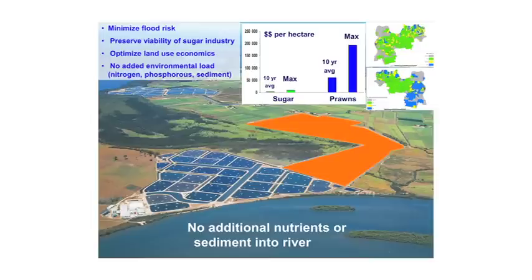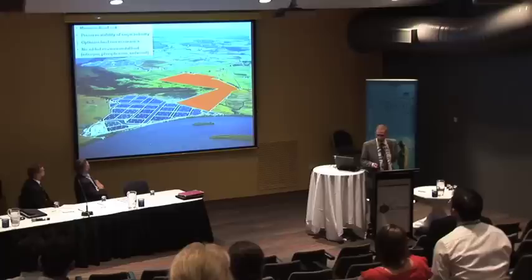A couple of examples here. This is actually the Logan River — not untypical from the eastern seaboard — sugarcane, and this is a prawn farm. In terms of this particular case we're involved in, the prawn farmer wanting to expand into the area outlined in orange. There were a number of issues: it couldn't impact on flood risk, needed to preserve the viability of the sugar industry, optimising land use economics, and having no added environmental load of nitrogen, phosphorus, or sediment into the Logan River.